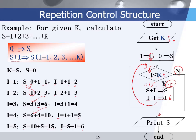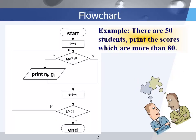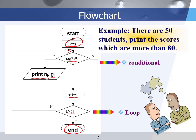In this example, there are 50 students and you are requested to print the scores that are more than 80. We use i as the loop index and gi to represent the score of the i-th student. If gi is greater than or equal to 80, we print out the student number and score; otherwise we increase i by 1. Then we compare i with 50 — if i is greater than 50, we go to the end of the program; if less than 50, we go back to the beginning. This flowchart has two conditional operators: one is a conditional structure, and the other is a loop.